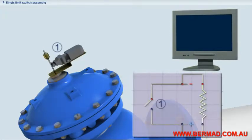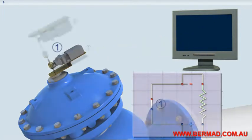The single limit switch assembly is equipped with one electric switch which sends a signal to a control system when the Bermod 700 series valve is in the closed position.